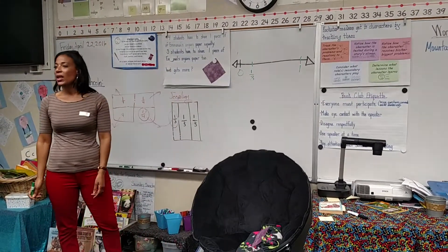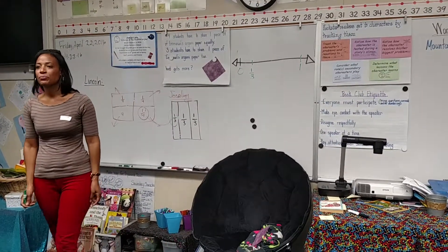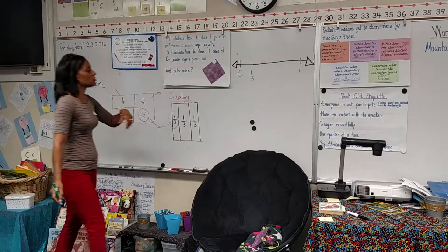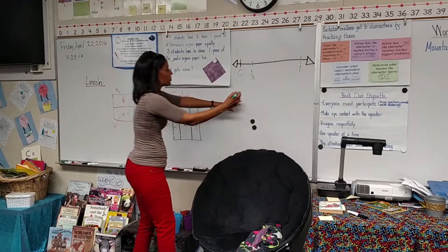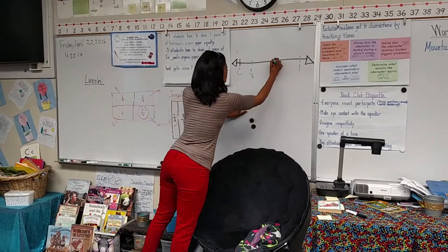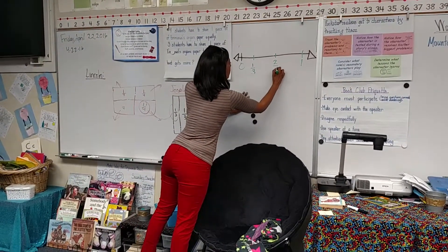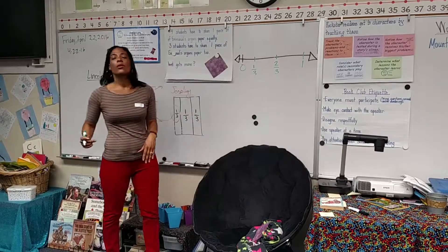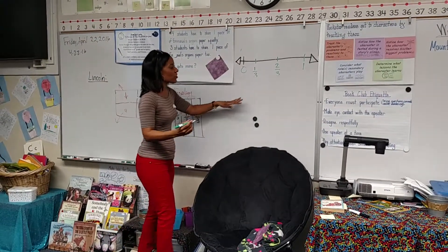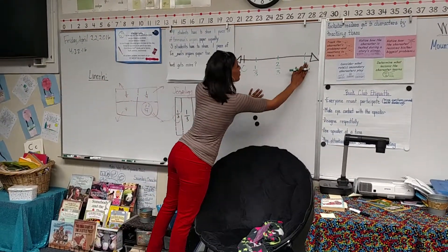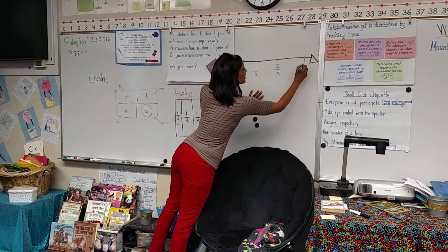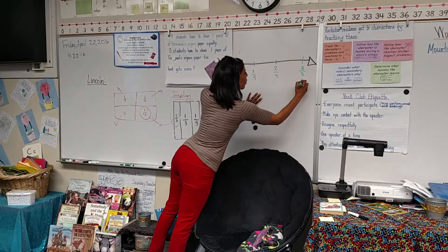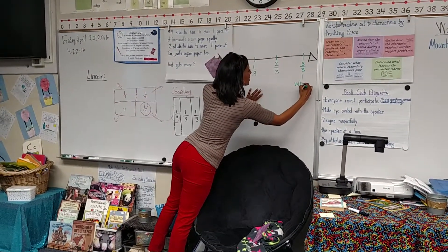What fraction would come next? Two-thirds! And what fraction would come last? Three-thirds! And three-thirds is the same as one whole.